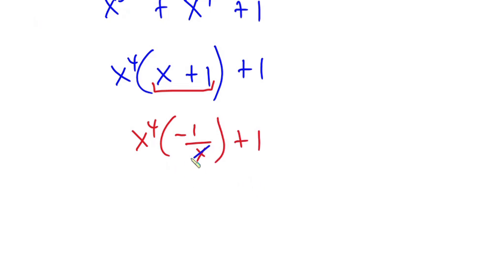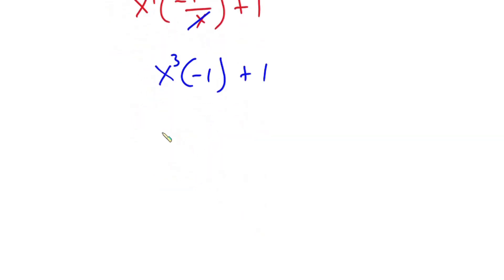And straight away you can see that this x will reduce this power to 3. So we have x to the third power into negative 1 plus 1. And this is also the same as negative x to the third power plus 1. Now if you factor negative 1, we have negative into x to the third power minus 1.